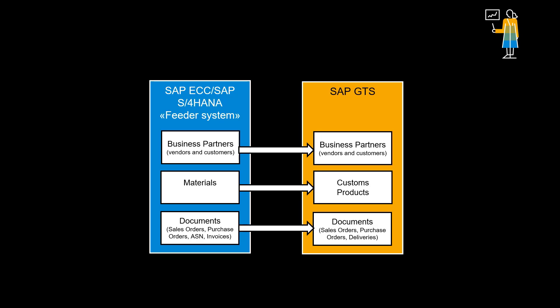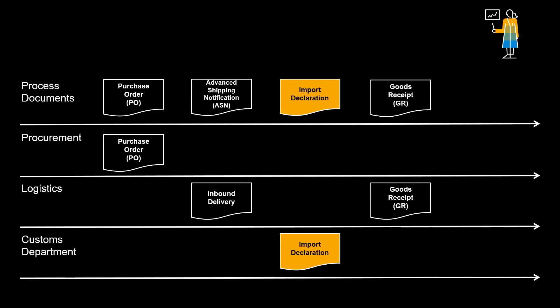Relevant data, such as business partners, materials, and of course the relevant business transactions, are replicated between the feeder system and SAP GTS.